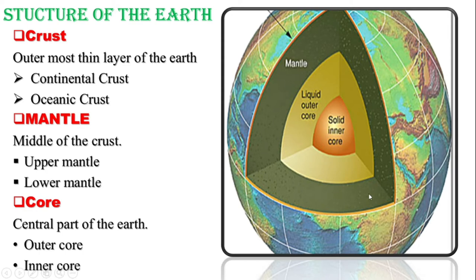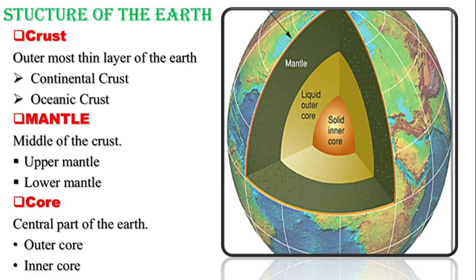The mantle is the second layer and is of two types: upper mantle and lower mantle. The upper mantle is the topmost portion and the lower mantle is the portion below it. Next is the core, which is also of two types: inner core and outer core. That is the basic structure of the earth.